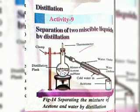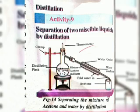Take one condenser and attach one end to the flask. On the other side of the condenser, keep a beaker to collect the distillate. When heated, the acetone vaporizes and condenses in the condenser. The acetone is collected from the condenser outlet, and water remains in the distillation flask. This separation technique is called distillation.